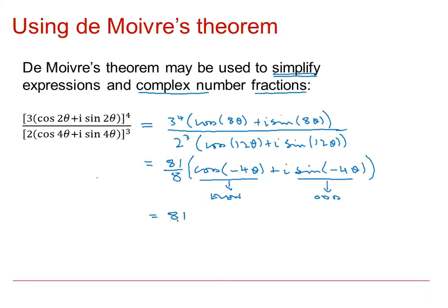So if we just do those one at a time, we've got 81 over 8. So because cos is an even function, cos of minus 4 theta is the same as the cos of plus 4 theta. And sine is an odd function, so the sine of minus 4 theta is the negative of the sine of 4 theta. So that's probably the simplest we can get to the answer.